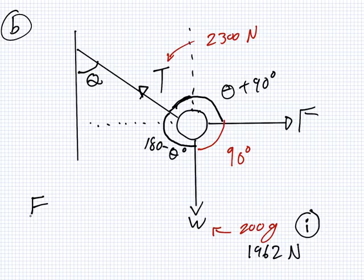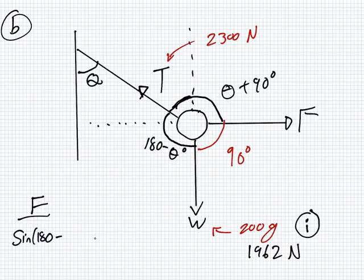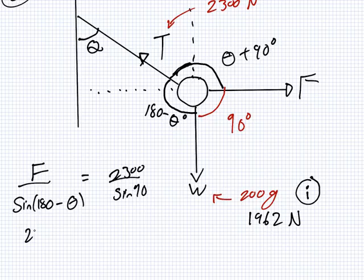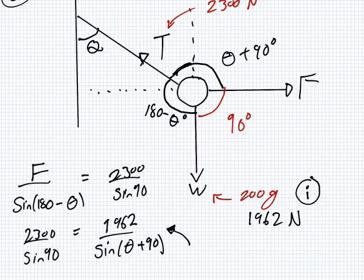Now, do I know theta? So I probably have to, oh, part three is the theta we have to find. Yeah. So what did Lami say? Lami said S over sine 180 minus theta, that's equal to 2300 over sine 90. And also equal to W over sine theta plus 90. Okay. Wonderful. What can this give me? What can I get from this? I can get theta. Yes. And if I have theta, what can I get from this? I can get F.